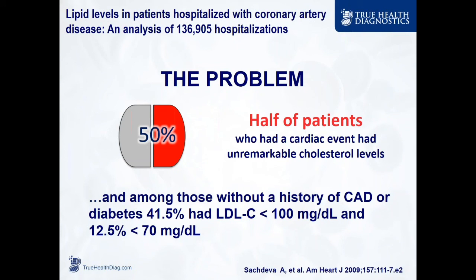Here is the problem with LDL cholesterol. From a gigantic study of over 130,000 folks admitted to the hospital because of an acute coronary syndrome, or with existing coronary artery disease, over 50% of these people with absolute coronary atherosclerosis had an LDL cholesterol below 100 mg per deciliter. About 13% had an LDL cholesterol less than 70 mg. Among those who came in with acute coronary syndromes, 42% had an LDL-C less than 100 mg. So you might ask yourself, is this our best biomarker? Miss half of the people?